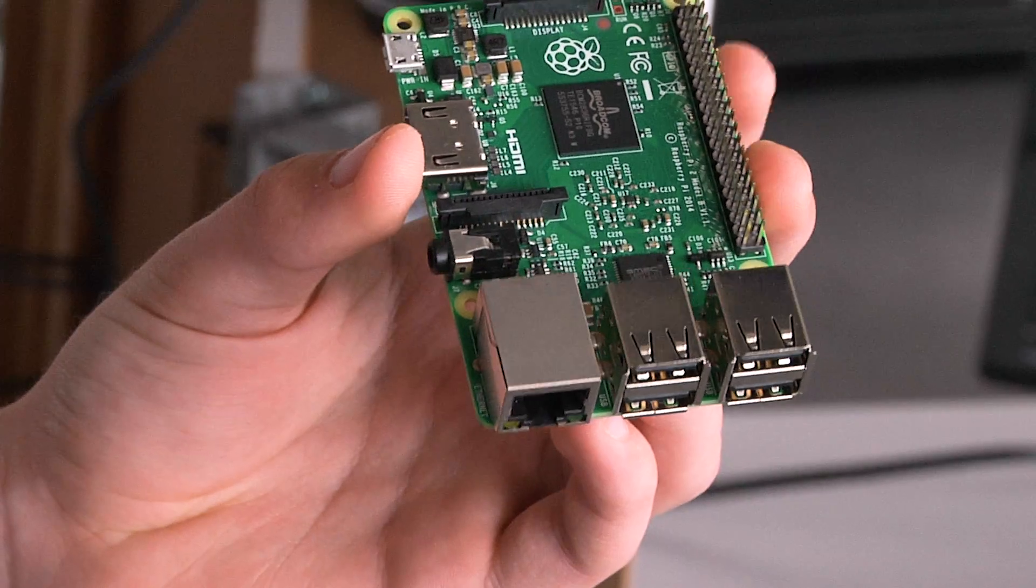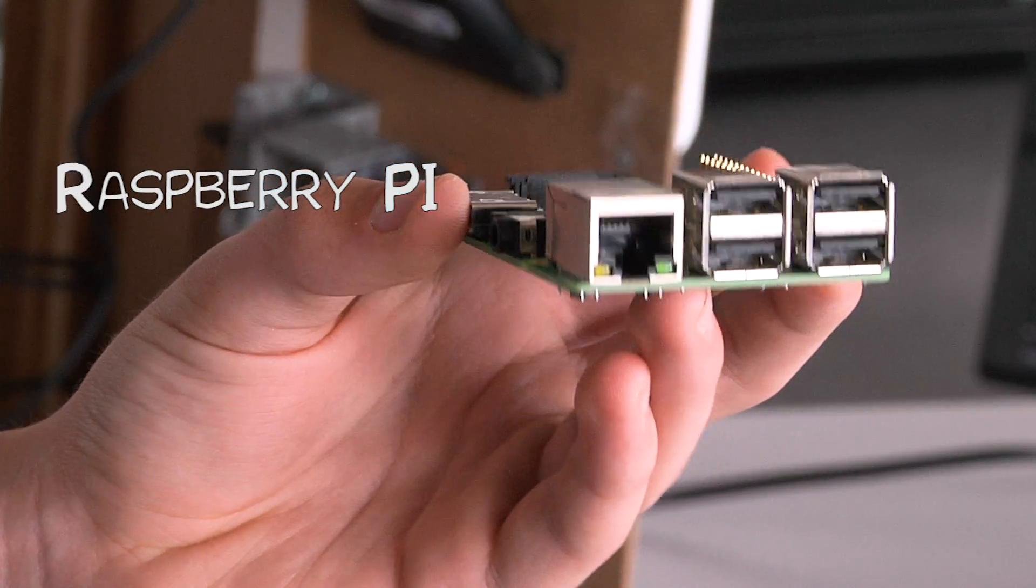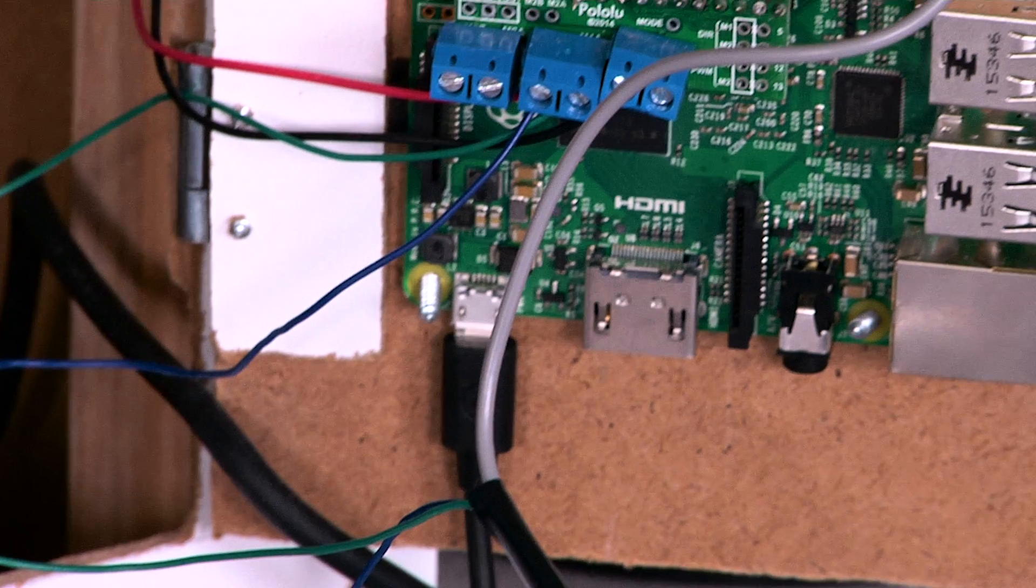For the brain of the system, we decided to use a miniature computer called the Raspberry Pi because it's a small and easy to use computer that could easily fit inside the locker.